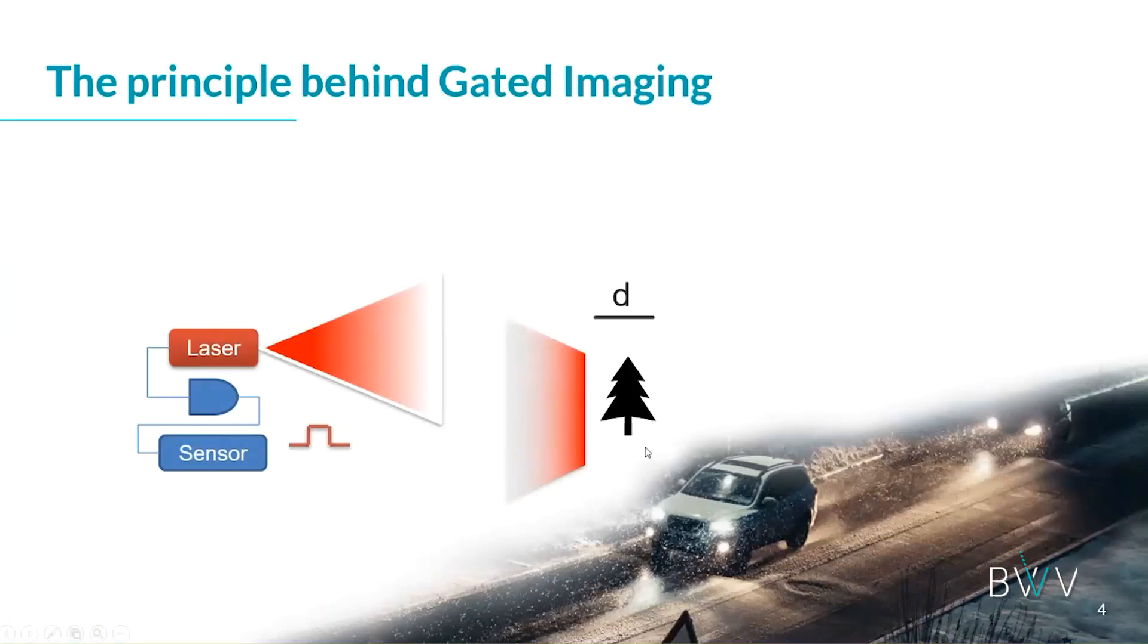So like a LiDAR, we start with illuminating, generating a laser pulse. We are working at the 800 nanometer regime, and we'll later explain why we decided to work in this unusual wavelength. We flat illuminate the whole scene, so we have no scanning parts, and everything is illuminated simultaneously.